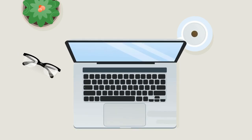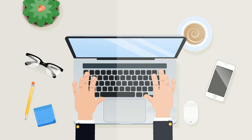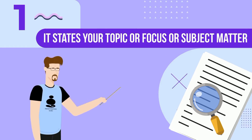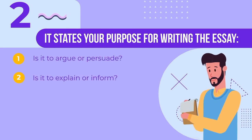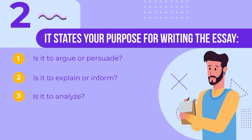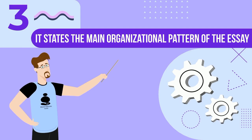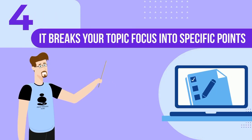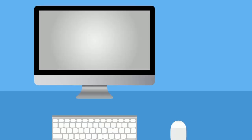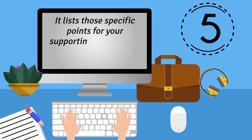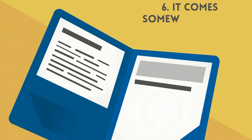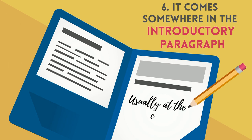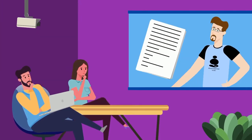In drafting your essay, write a thesis that has the following characteristics: one, it states your topic, focus, or subject matter; two, it states your purpose for writing the essay — is it to argue or persuade, to explain or inform, or to analyze; three, it states the main organizational pattern of the essay; four, it breaks your topic focus into specific points; five, it lists those specific points for your supporting paragraphs in the order in which you will discuss them; six, it comes somewhere in the introductory paragraph, usually at the end. Follow these tips and you are sure to write a good thesis statement.